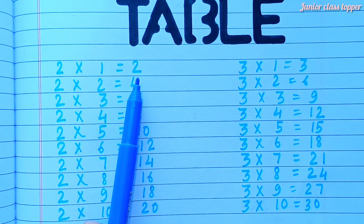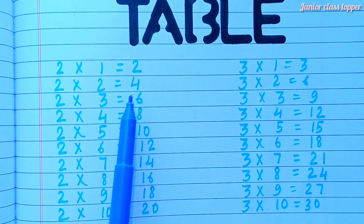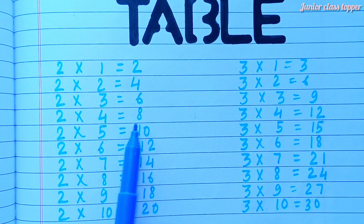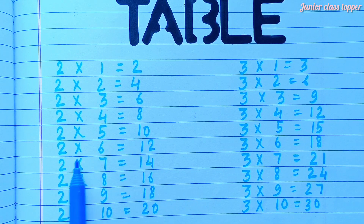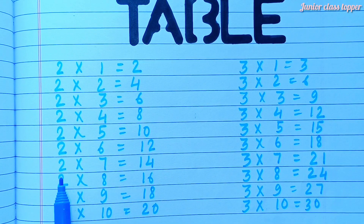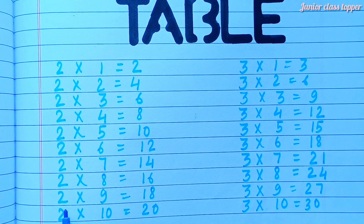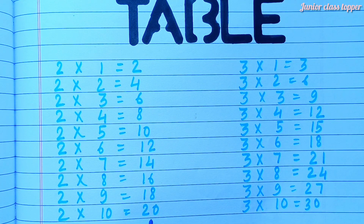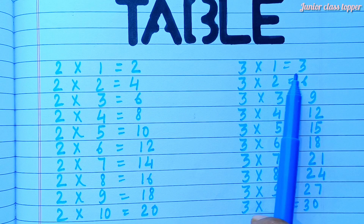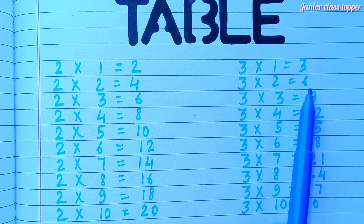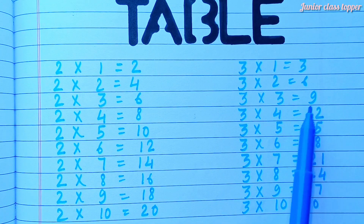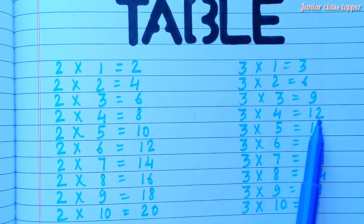Two ones are two. Two twos are four. Two threes are six. Two fours are eight. Two fives are ten. Two sixes are twelve. Two sevens are fourteen. Two eights are sixteen. Two nines are eighteen. Two tens are twenty. Three ones are three. Three twos are six. Three threes are nine. Three fours are twelve.